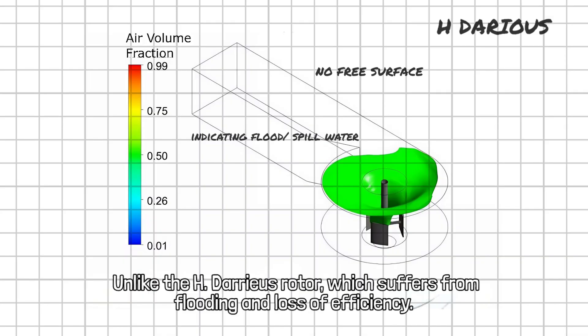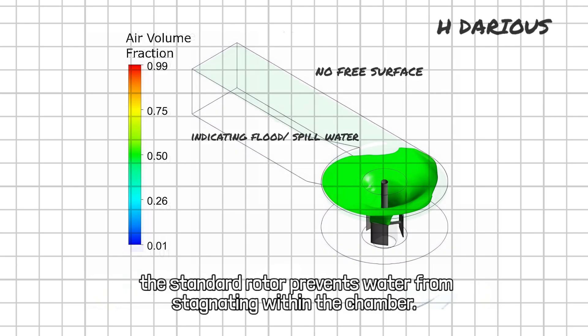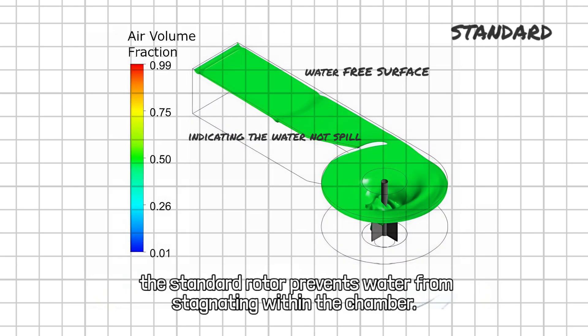Unlike the H. Darius rotor, which suffers from flooding and loss of efficiency, the standard rotor prevents water from stagnating within the chamber.